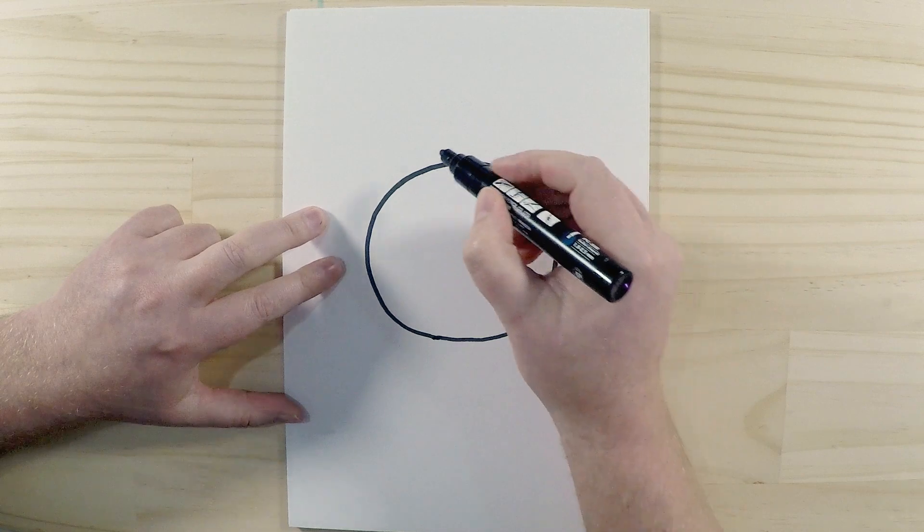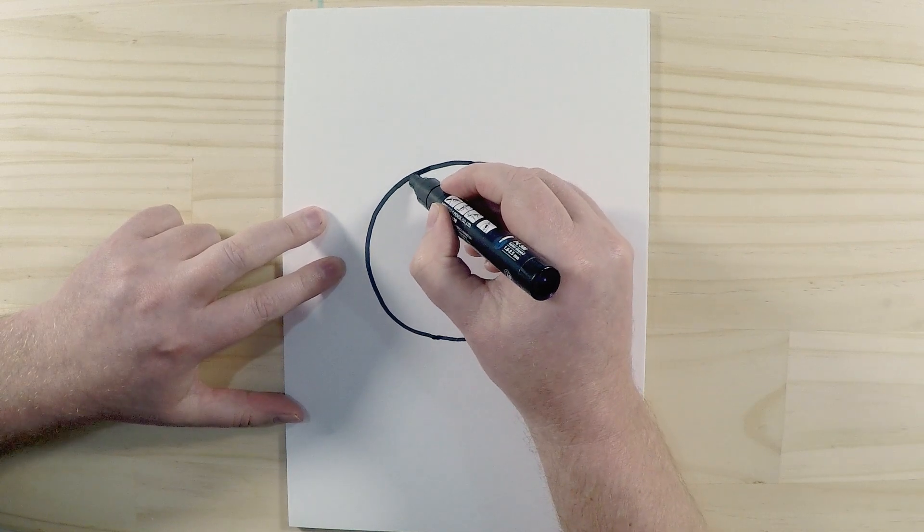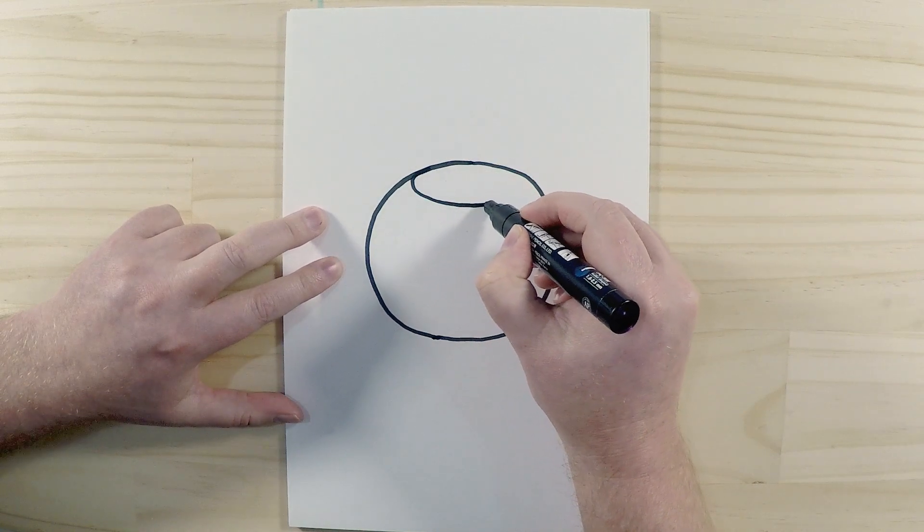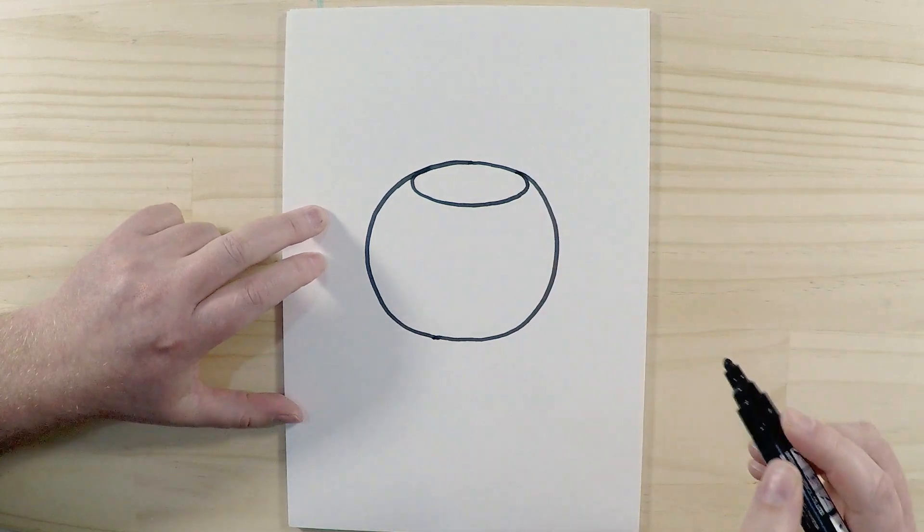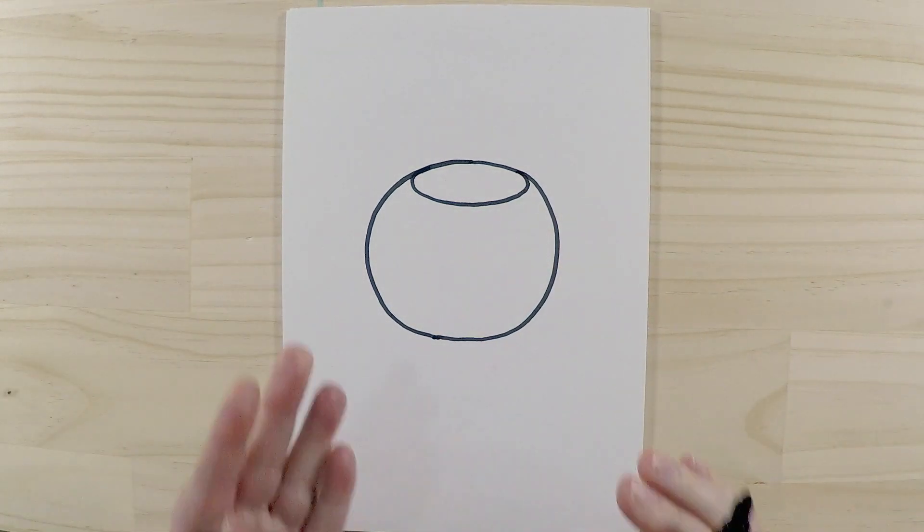and we're just going to carry on a loop around like that. So we'll just go around like here, then around like that. So there's the bowl.